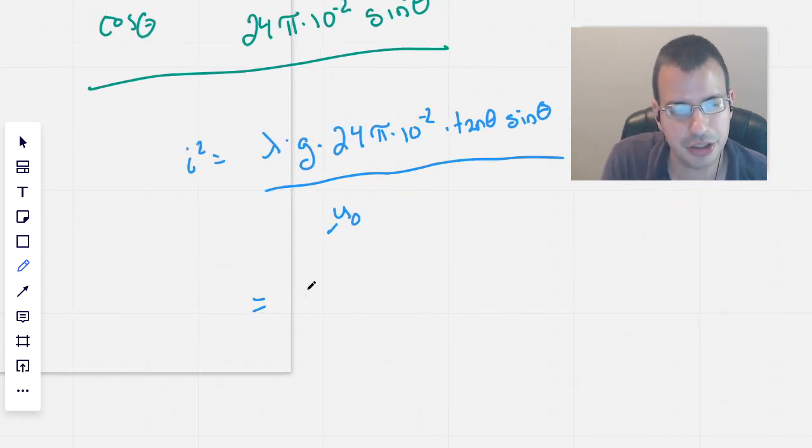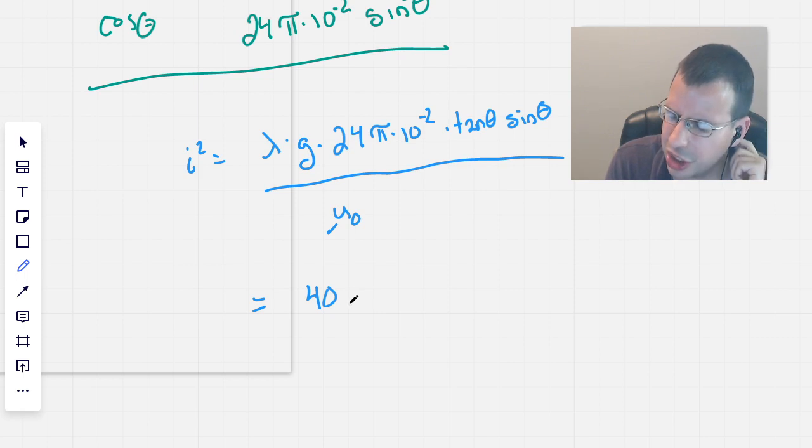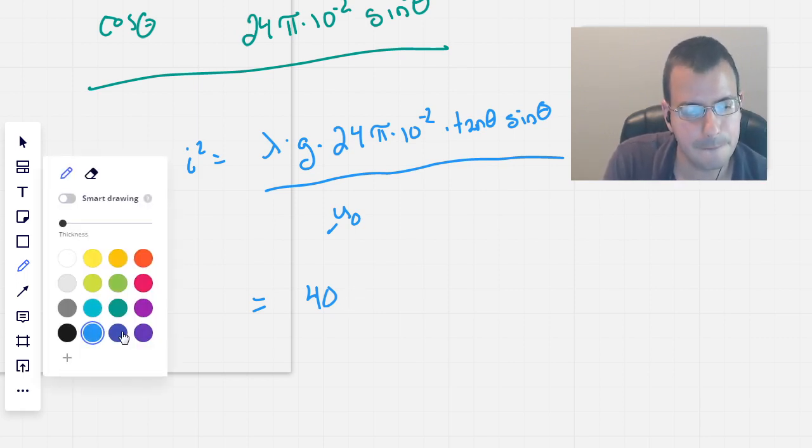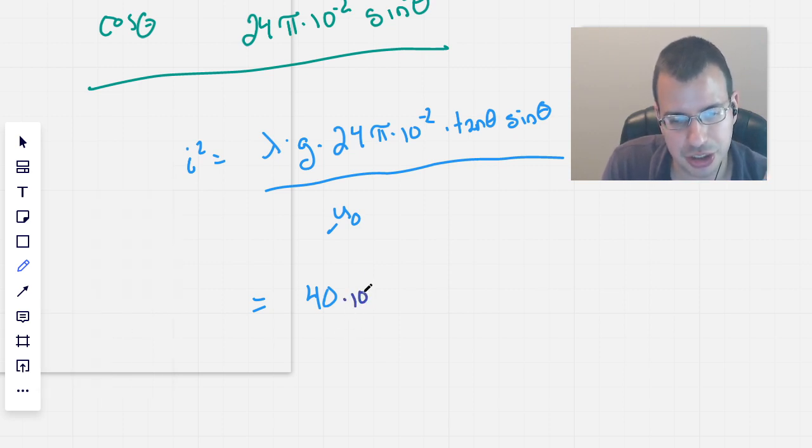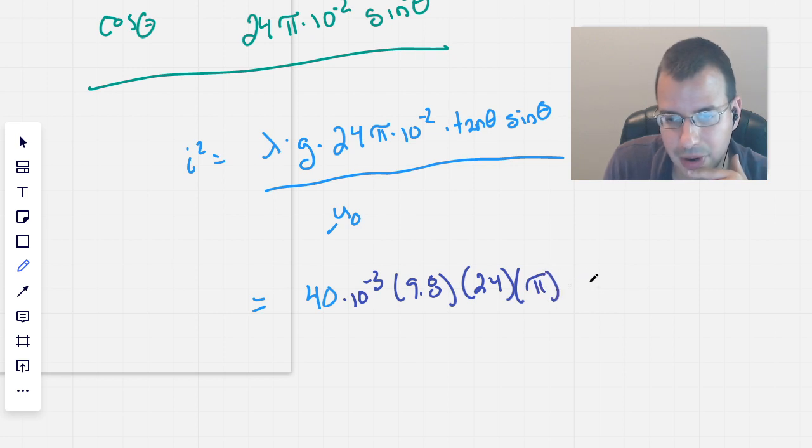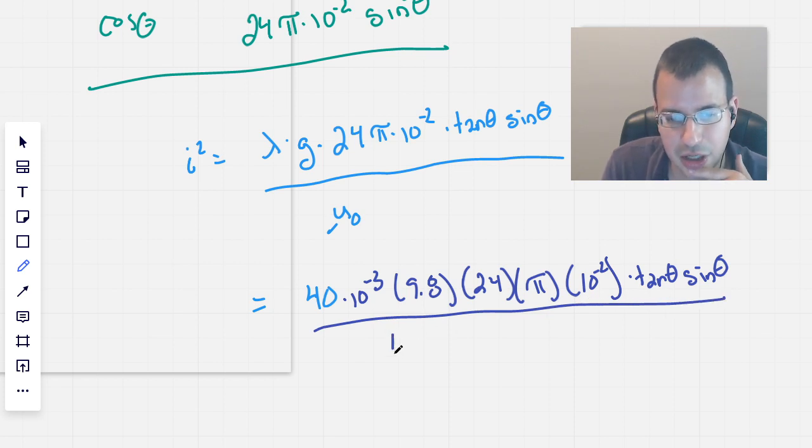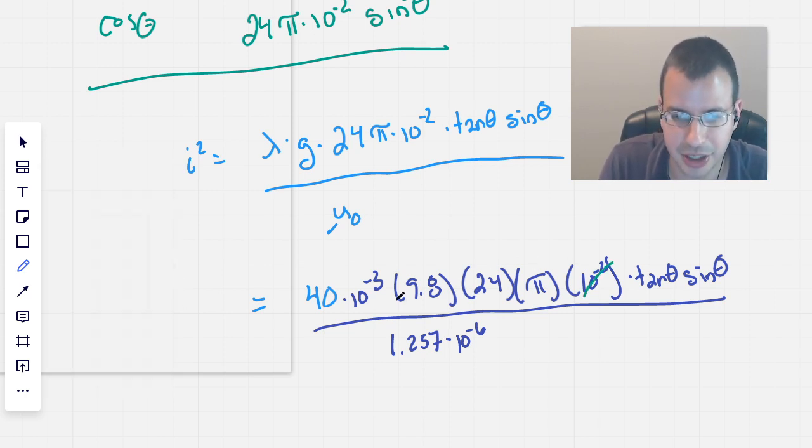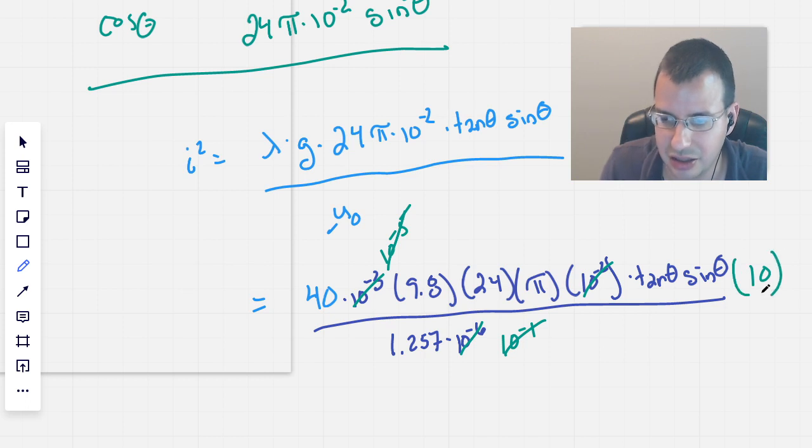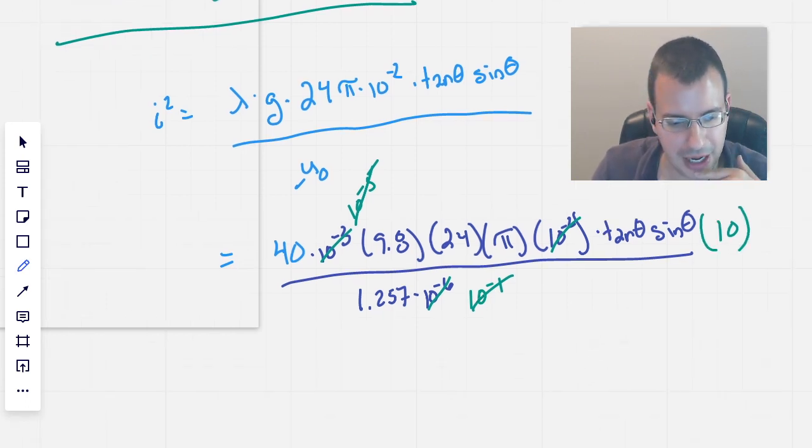So doing some more, putting in some more numbers. So lambda is, I think it was 40 grams per meter. So I'll convert grams to kilograms just to be SI. Make everything consistent. 9.8 for gravity. 24, it's still 24. I have a pi. You have a 10 to the negative second. We have a tangent of theta. We have a sine of theta. That's also a cosine on the bottom, but I got rid of it with a tangent. And then 1.2257 times 10 to the negative 6. This will become 10 to the negative 5th. That'll cancel, give us 10 to the negative 1. That'll go to the top, which will be 10. I think that's good.